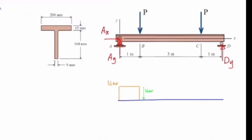From point B to C, the shear force is zero because there is no external loading. At point C, there is another jump with a magnitude of 16 kN going downward. From point C to D the shear force is constant, and at point D the reaction support produces another jump that brings the final shear force back to zero, confirming the calculation is correct. The maximum shear force is 16 kN.